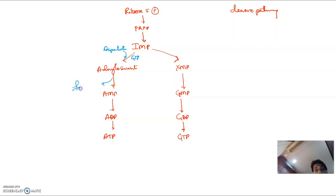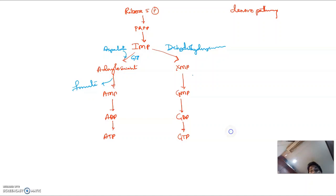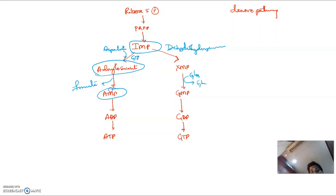Fumarate is released here. IMP dehydrogenase — which is inhibited by mercaptopurine, mycophenolic acid, etc. — carries out this step. Glutamine gives an amino group to form GMP. So IMP forms adenylosuccinate which forms AMP; AMP forms ATP. IMP forms XMP; XMP forms GMP; GMP forms GTP.